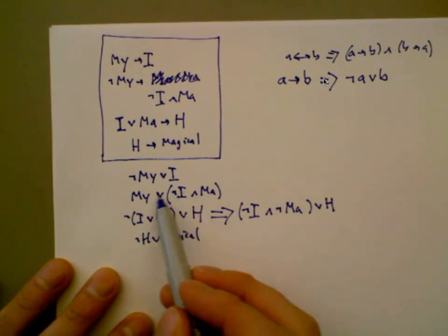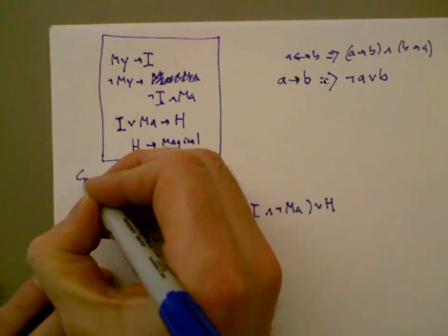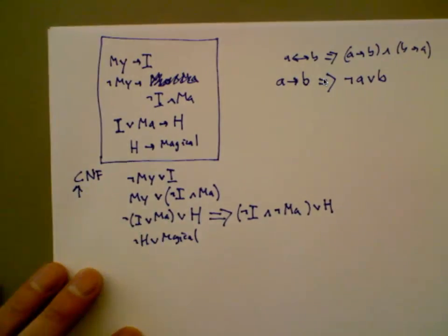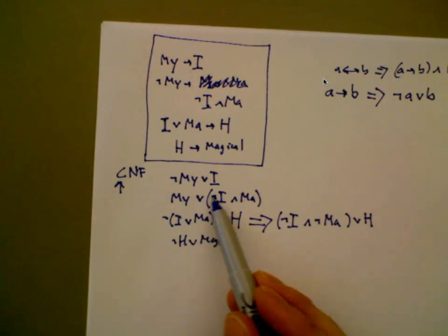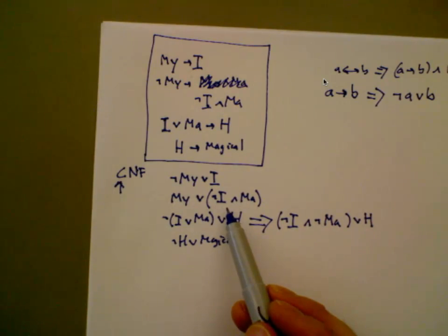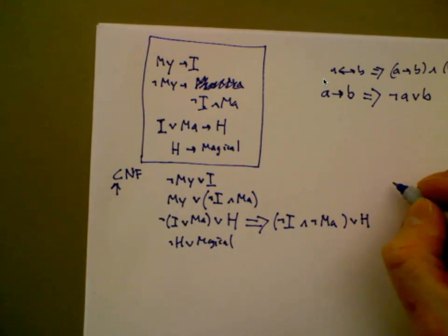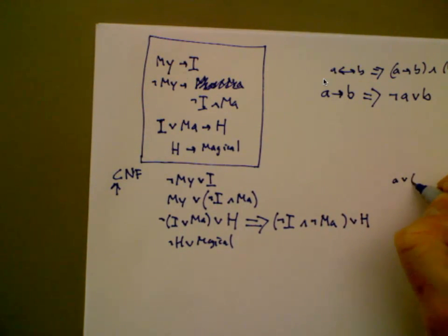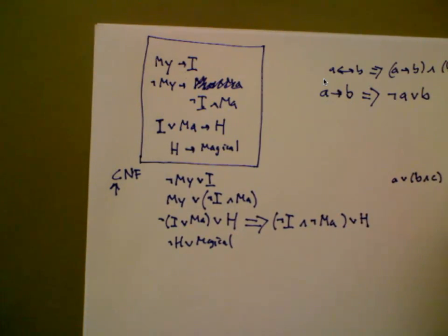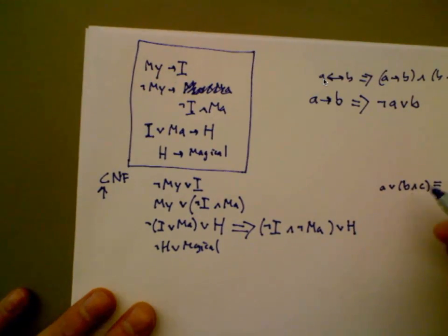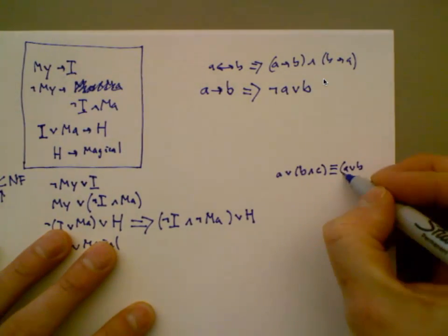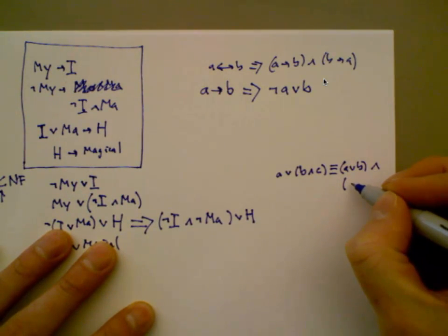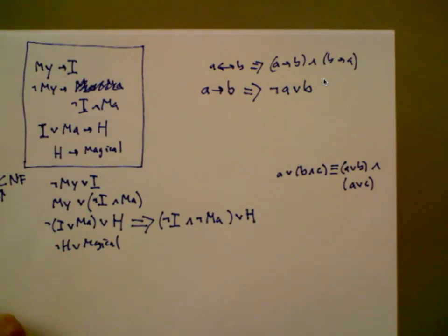Now we're not done yet because we have some yuckinesses. Conjunctive normal form places the emphasis on the conjunction — your formula is going to be an AND of ORs. But these are ORs that contain ANDs, so that is not CNF. If I ever have A or (B and C), that's totally equivalent to (A or B) and (A or C). Now we have an AND of ORs — emphasis on the AND. Conjunctive normal form.